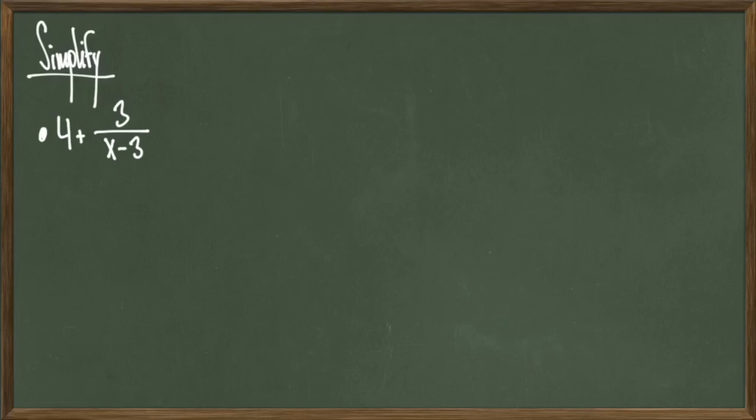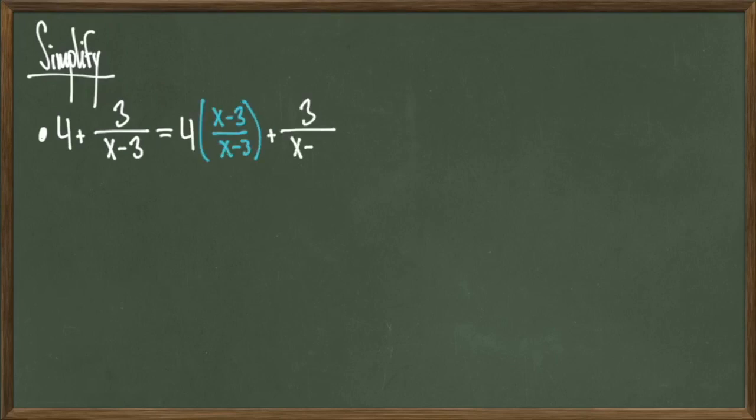Since we have a fraction in play, the first thing we need to do is find a common denominator for both of these. Since we're dealing with the whole number 4, all I have to do is multiply 4 by x minus 3 over x minus 3. Therefore, I get the revised quantity 4 times x minus 3 over x minus 3 plus 3 over x minus 3. This multiplication hasn't changed the value because x minus 3 over x minus 3 is just equal to 1.